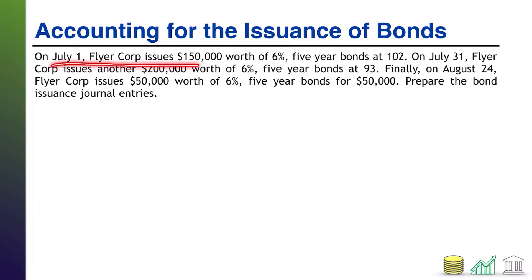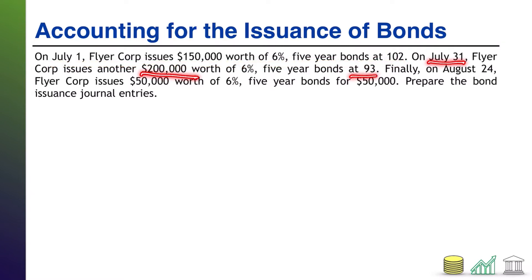On July 1st, Flyer Corps issues $150,000 worth of 6% five-year bonds at 102. On July 31st, they issue another $200,000 worth at 93. And on August 24th, they issue $50,000 worth for $50,000. Prepare the bond issuance journal entries for each of these dates.